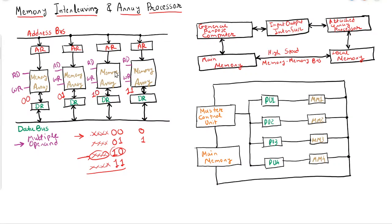The next topic is array processor. Array processors are specifically designed hardware used to enhance the arithmetic or vector processing ability of a computer. These are not actually part of the normal CPU but are attached additionally.